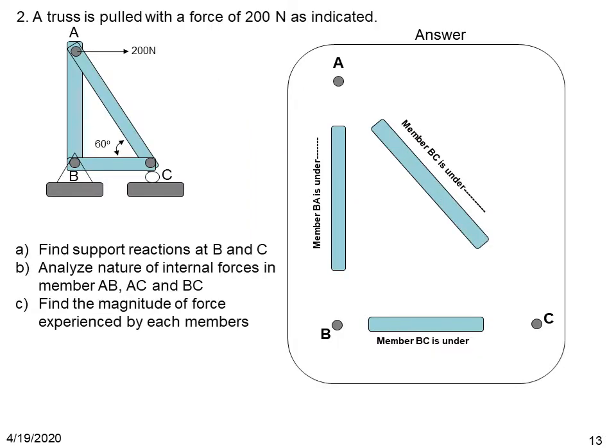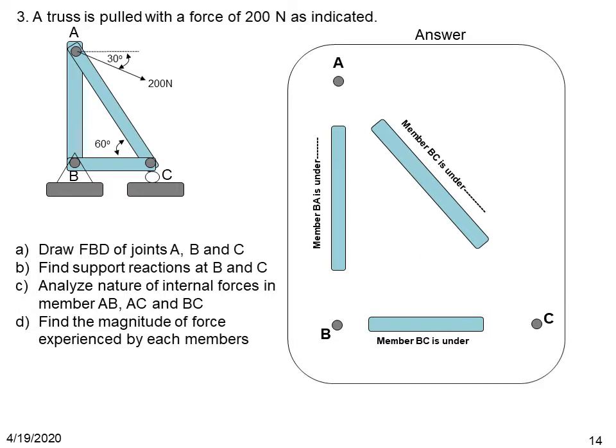There are two practice problems to solve. The first is a repetition of the same problem with a different external force of 200 newton and an angle of 60 degrees. The second problem has the external force acting at an angle of 30 degrees. In both problems, follow the same procedure to solve for the internal forces as well as the support reactions at B and C.